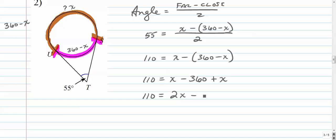Alright, that changes the positive 360 to a negative, and a negative x to a positive x. Combine like terms, 2x minus 360, add 360, we get 470, and divide by 2, 235. Alright, and you can check that if you'd like. Put x back in here, that's 235, and this is 360 minus 235, or 125, and that should work out.